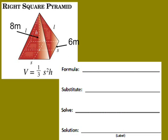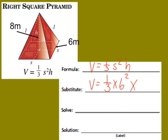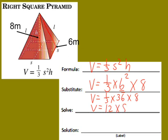Let's do a pyramid. The volume formula for a pyramid is one-third times side squared times the height. Substituting in: one-third times side of 6 squared times the actual height, which is 8 — not the slant height. We do the exponent first: one-third times 36 times 8. One-third times 36 is 12, and 12 times 8 gives a volume of 96 cubic meters.